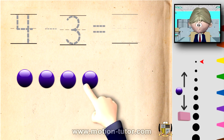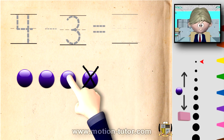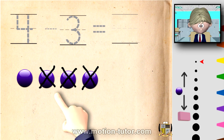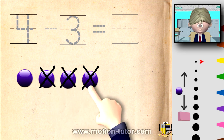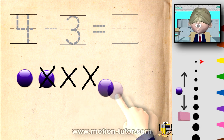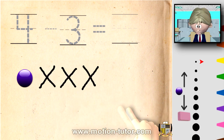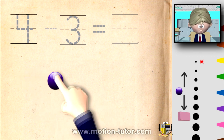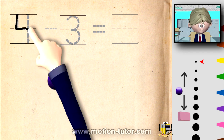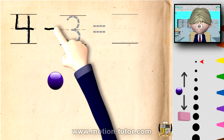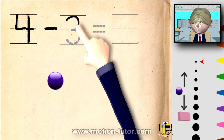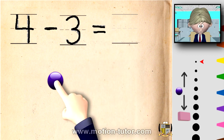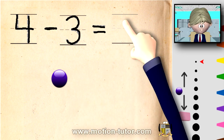And we're going to take away 3: 1, 2, and 3. So let's see how it looks when these 3 are taken away: 1, 2, 3 — and we see we're left with 1. So that's saying 4 take away, or minus, 3 is equal to 1, right here.